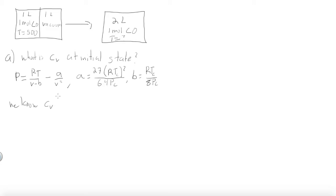We need CV real, and CV real is equal to CV ideal plus the integral from ideal volume to real volume of temperature times the second partial derivative of pressure over temperature at constant volume, integrated dV.